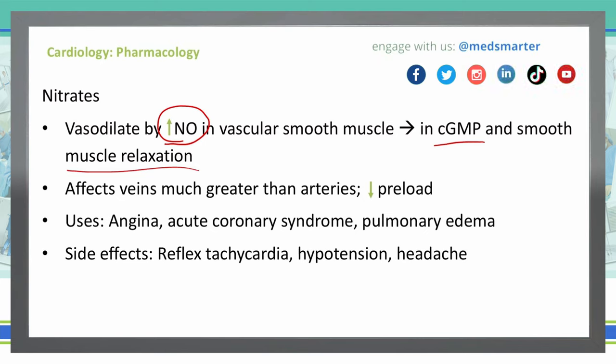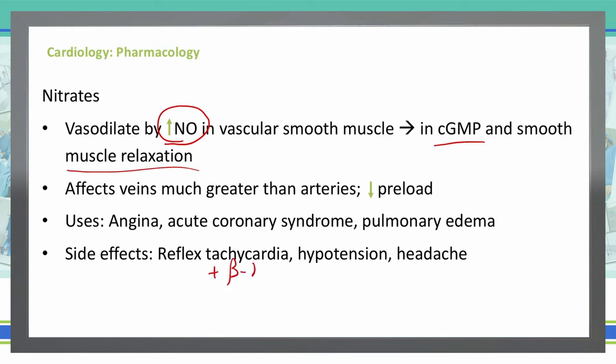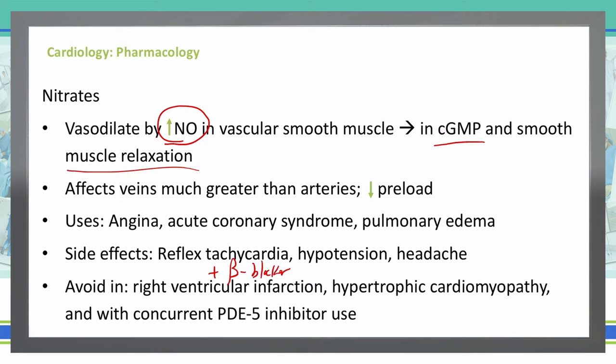Some of the adverse effects associated with nitrates are reflex tachycardia, hypotension, and headache. To reduce the risk of reflex tachycardia, we can add a beta blocker to this medication's administration. We will also avoid using nitrates for patients that have a right ventricular infarction, so we want to always confirm via EKG that we're not dealing with a right ventricular infarction.